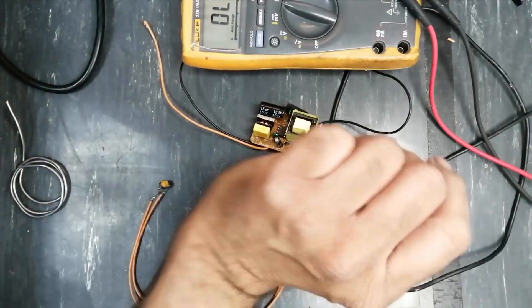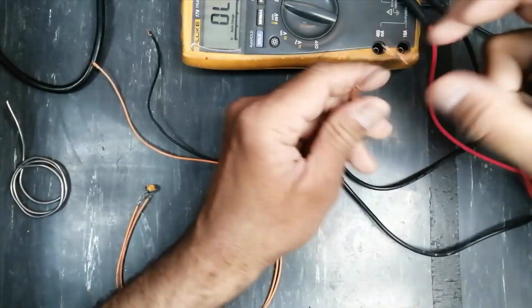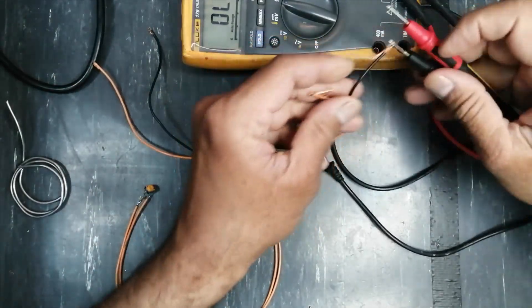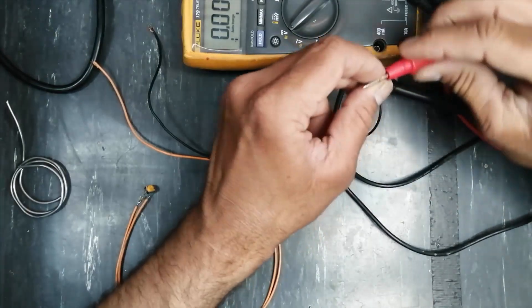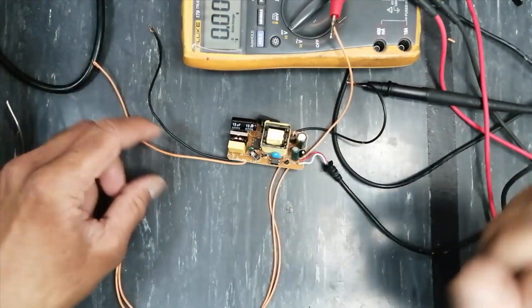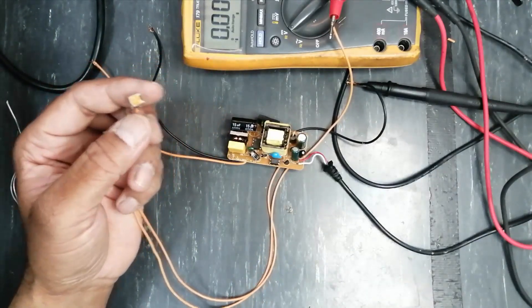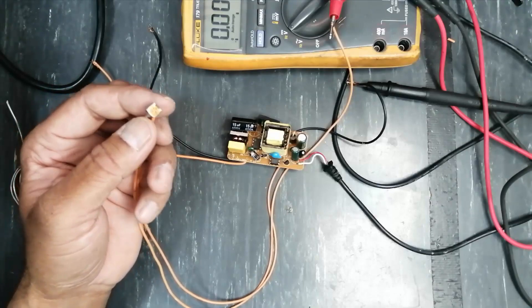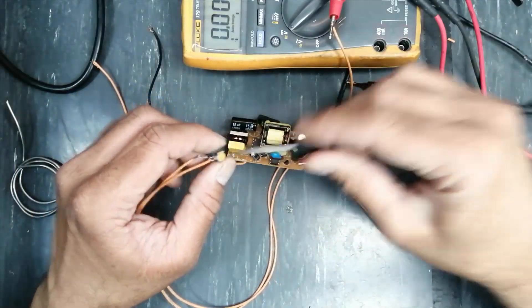Now we will check the voltage. Let's connect the multimeter to DC voltage. First I will adjust it to maximum leftmost position.